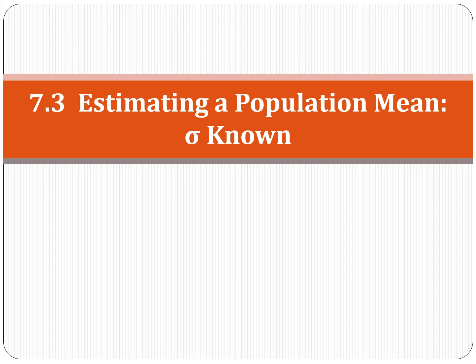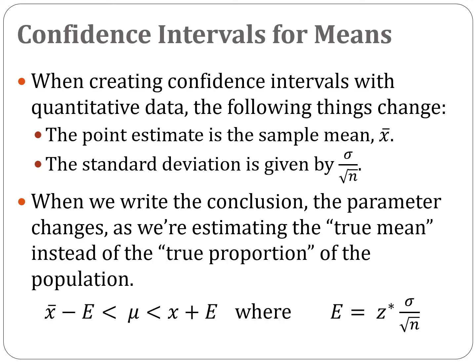Section 7.3 is essentially the same thing as section 7.2, only we're working with quantitative data instead of categorical data. In these problems, we're writing confidence intervals to estimate the mean of a population rather than the proportion of a population. So the following things are going to change: the point estimate changes from a p-hat to the sample mean x-bar.